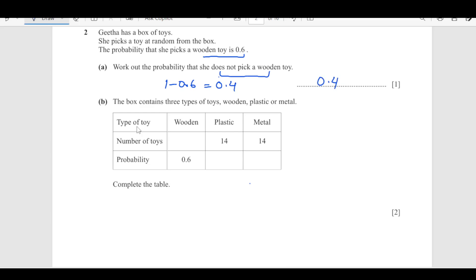Now, part B, a box contains 3 types of toys: wooden, plastic and metal. We are given this in the table. Complete the table. Now, if you see here, we have the probability of plastic and number of toys of plastic and metal, they are same. So, that means their probability also should be same.